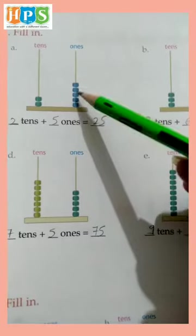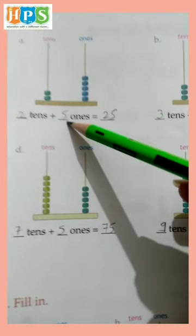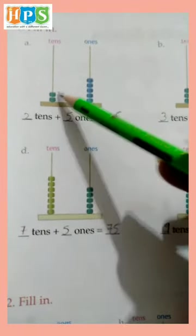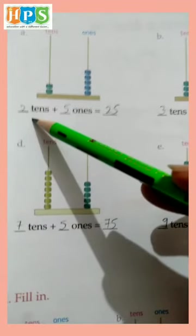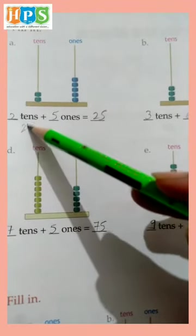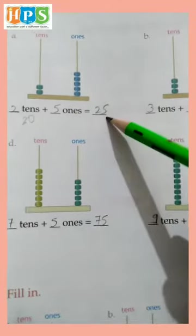One, two, three, four, five - five ones and one, two - two tens. Two tens equals twenty. Twenty plus five equals twenty-five.